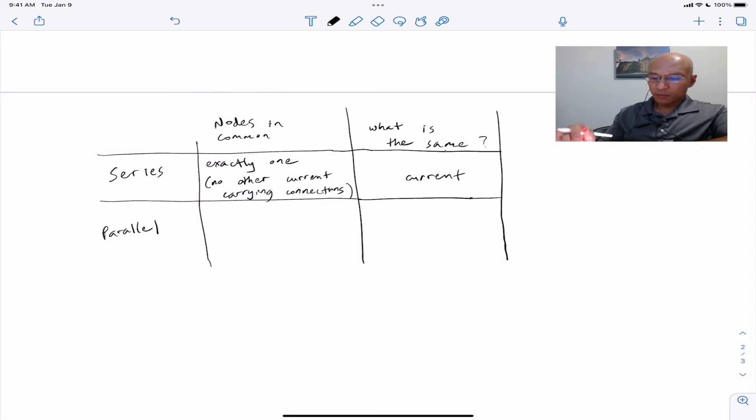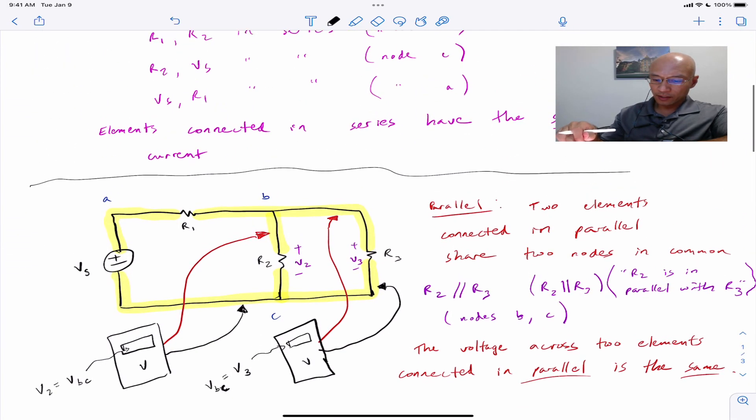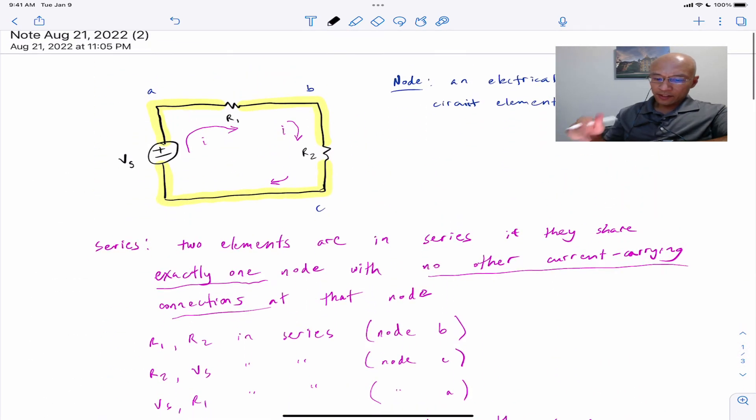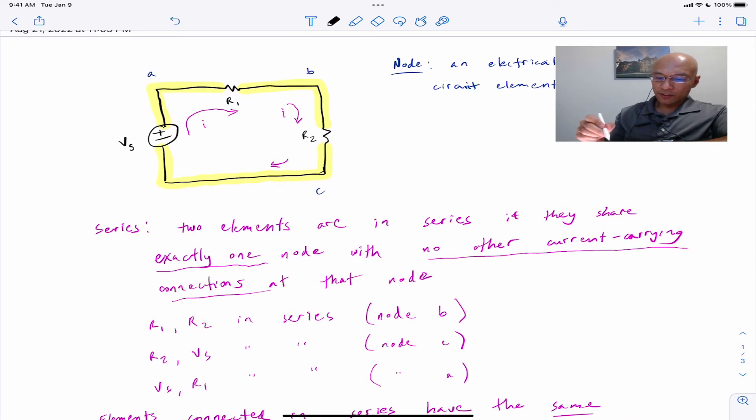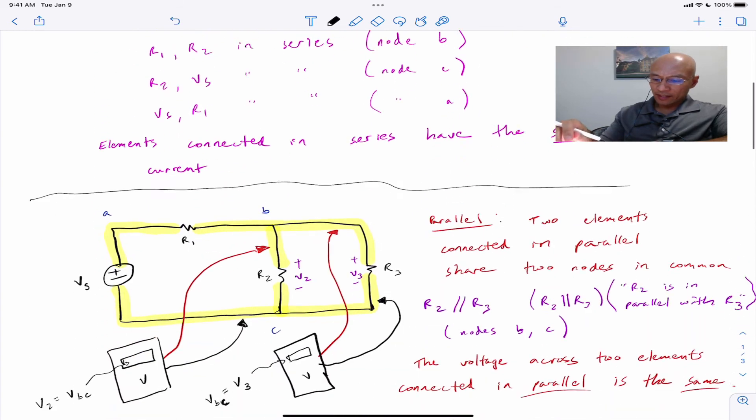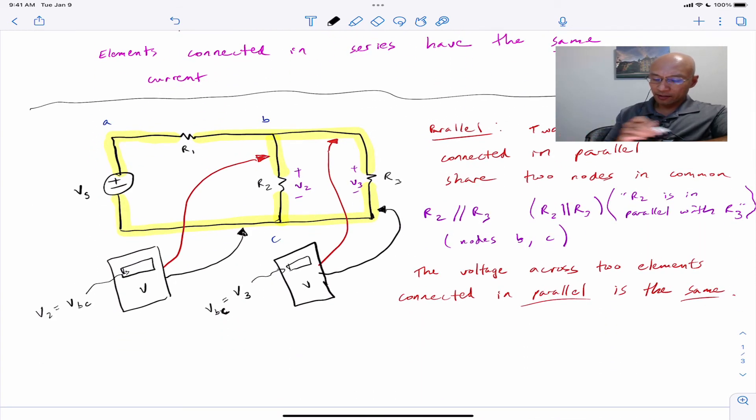So let me just point out something really quick. Notice here that everything is in series in this first circuit. And then when I connected R3 across here, no longer can I say that R1 and R2 are in series. It's tempting to say so, but they're not. Why? Because now we have a new current-carrying connection in R3.